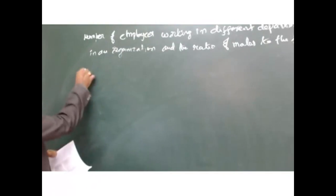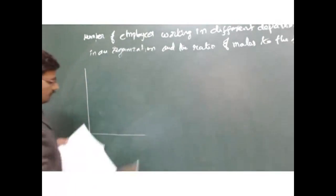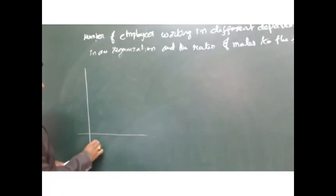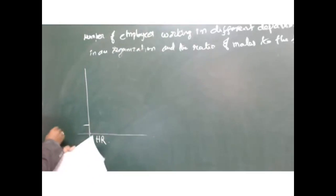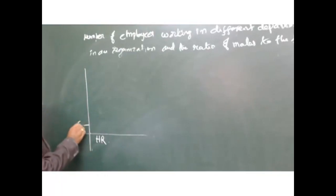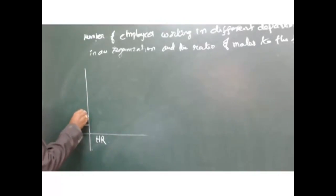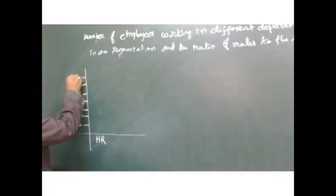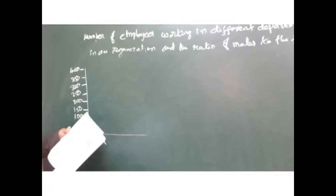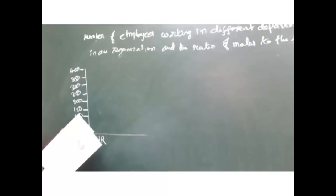Okay, so in the row, one bar chart. HR department - what is the value? 50, 100, 150, 200, 250, 300, 350, 400. HR department has around 225 members in the row.